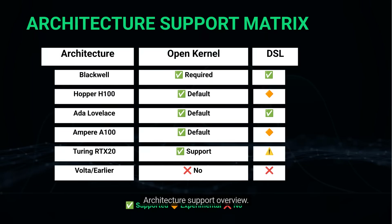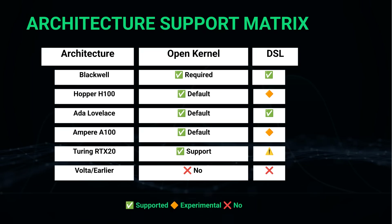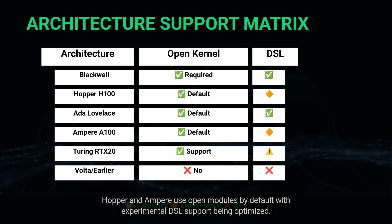Architecture support overview: Blackwell requires open kernel modules and has full DSL support. Hopper and Ampere use open modules by default with experimental DSL support being optimized.